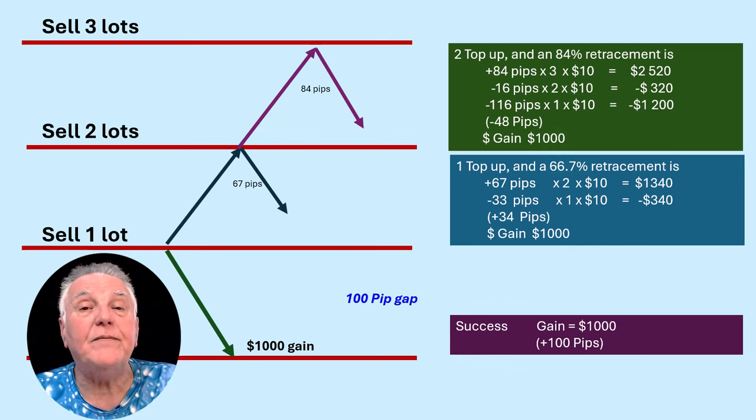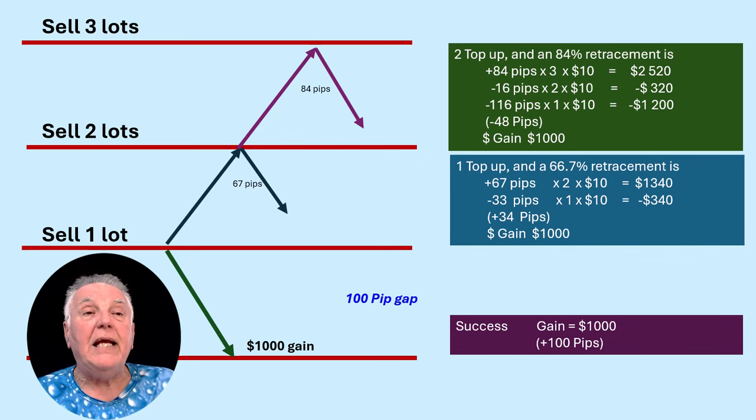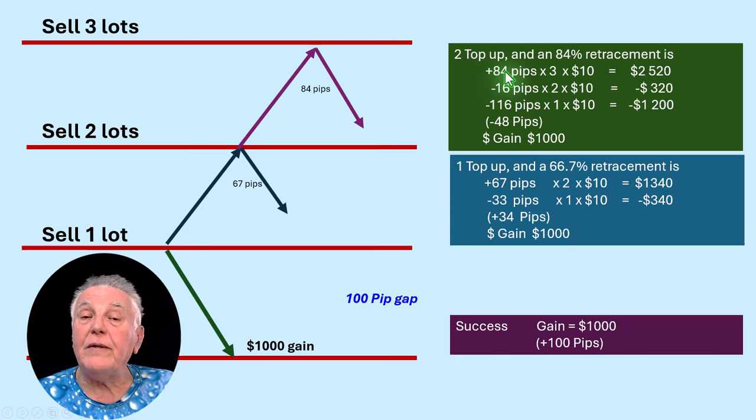But and here is where the explanation of negative pips comes in: if you add the pips of this deal that made a profit of 84, this one made a loss of 16 pips, and that one made a loss of 116 pips.